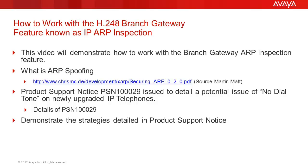If it receives another address that was in use by another telephone that the Gateway knows about, this particular circumstance is where the interaction with the IP ARP inspection feature would prevent dial-tone from being given to the telephone. This is the classic case of ARP spoofing, as the Gateway has a known IP address with a different MAC associated with it.